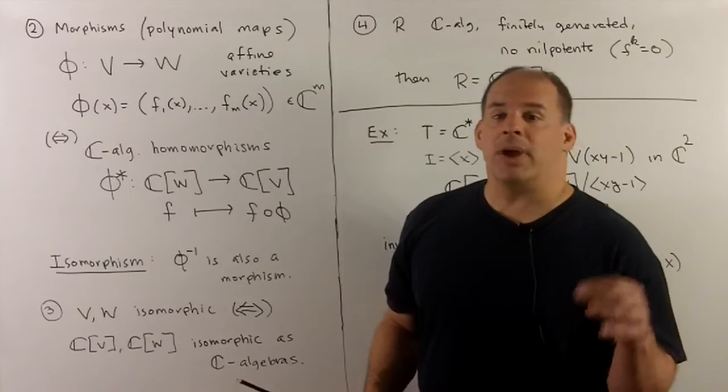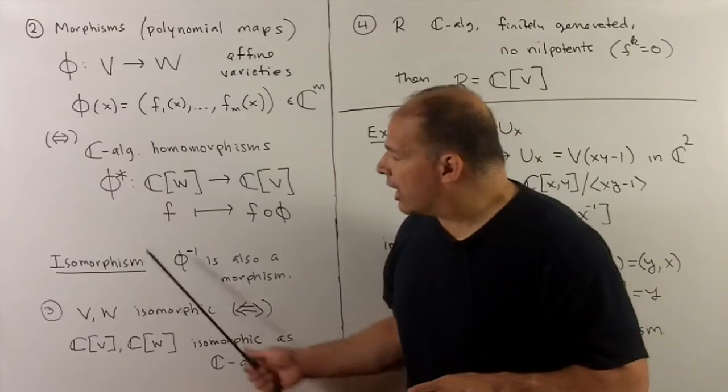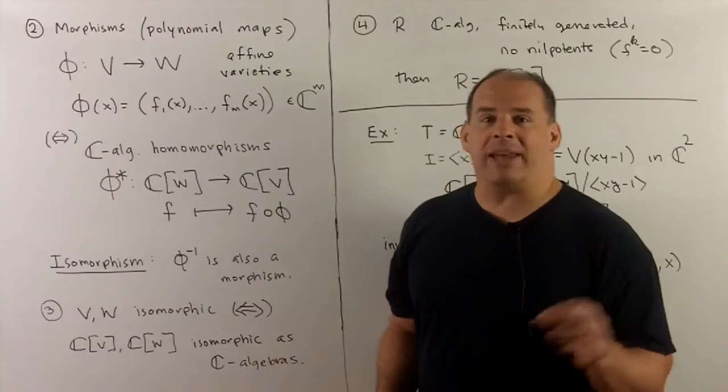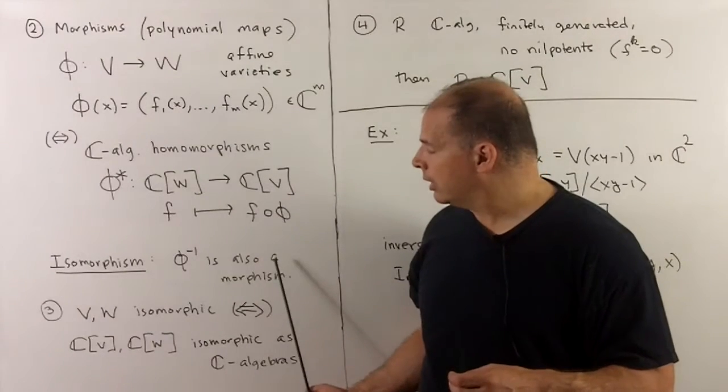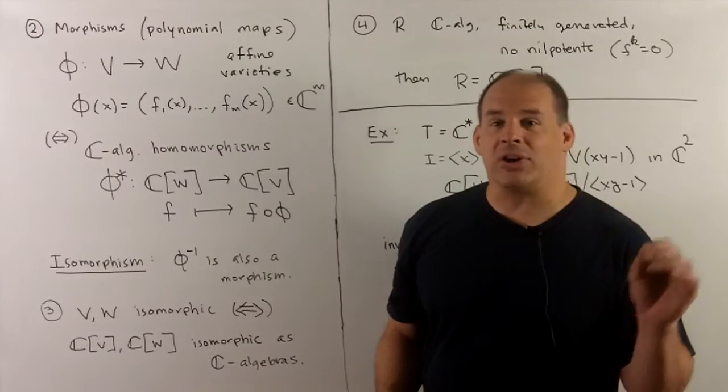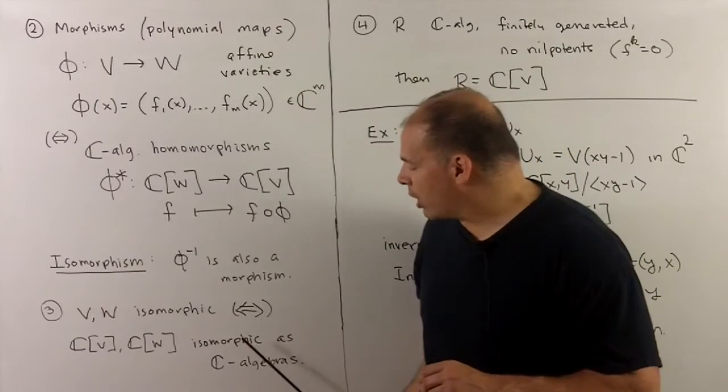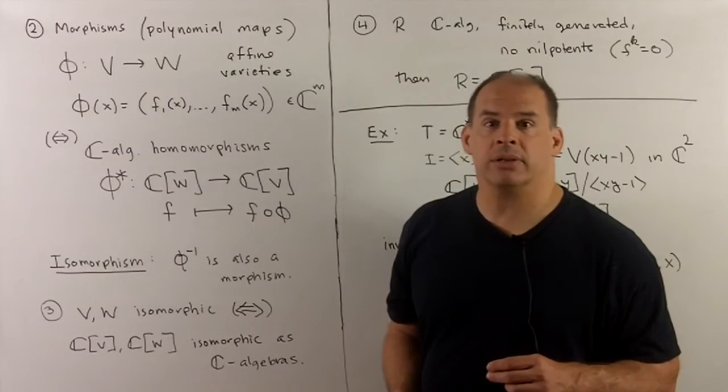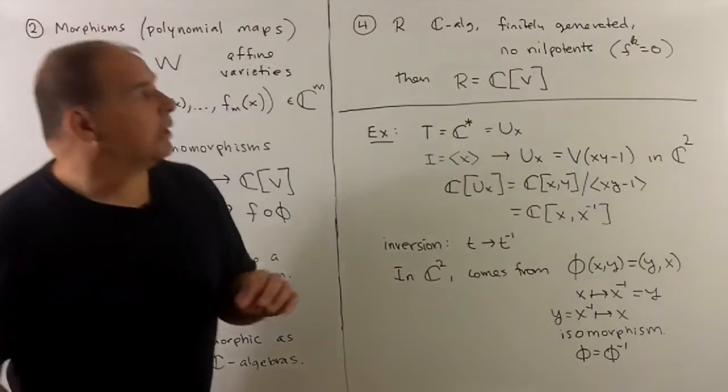Next, since we have a notion of morphism, we now have isomorphism. So isomorphism is just going to be a bijection between affine varieties such that the inverse is also a morphism. Next point, if we have two affine varieties that are isomorphic, then that's equivalent to saying that their coordinate rings are isomorphic as C-algebras.